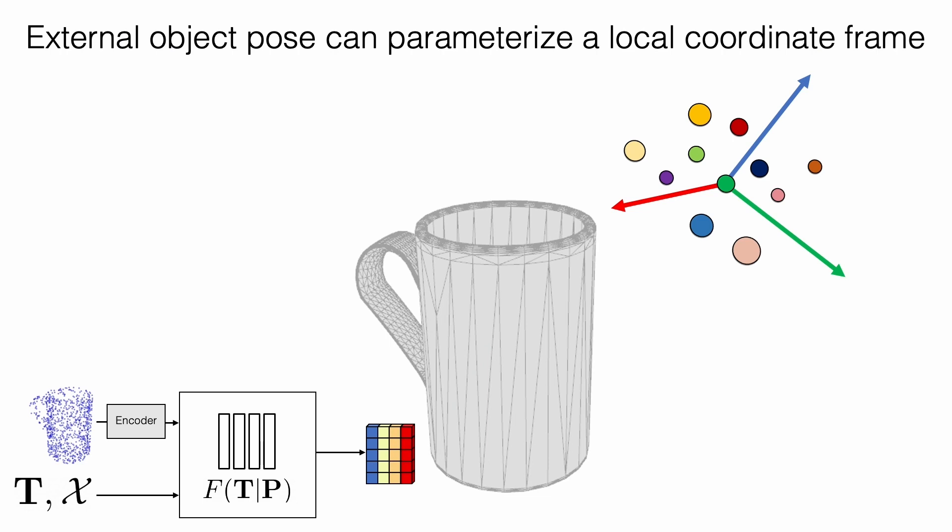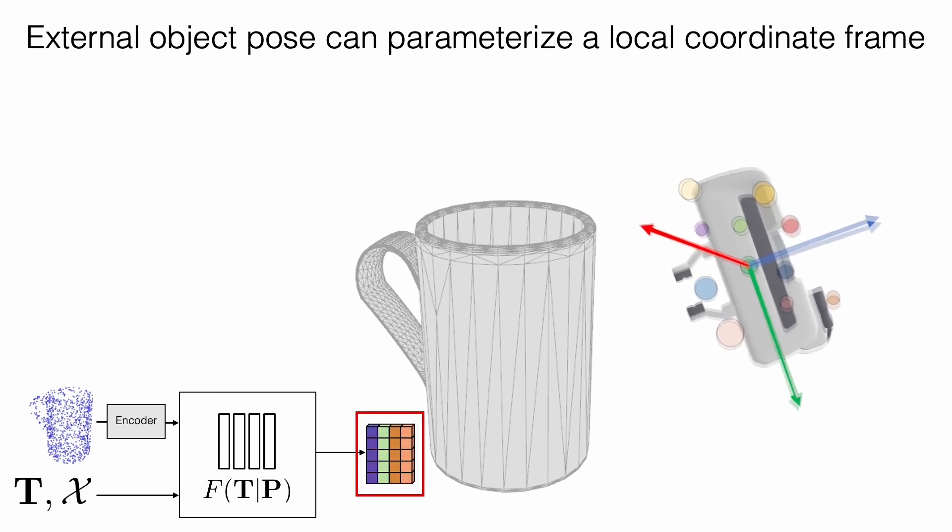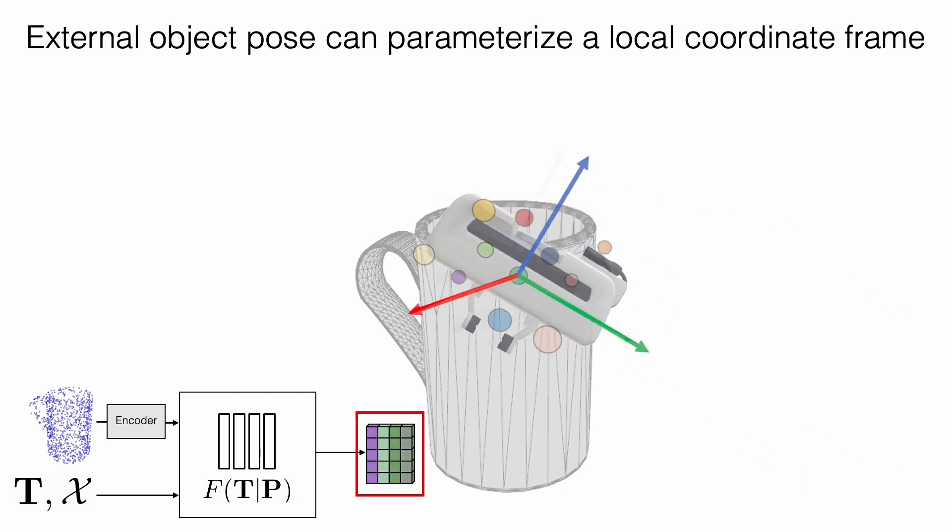Furthermore, an important observation is that we can easily attach an external rigid body, such as the gripper, to the query points. In this way, the body frame that defines the pose of the gripper can directly parametrize a local frame in the vicinity of the object, and we can therefore directly encode this gripper pose using our pose descriptor field.